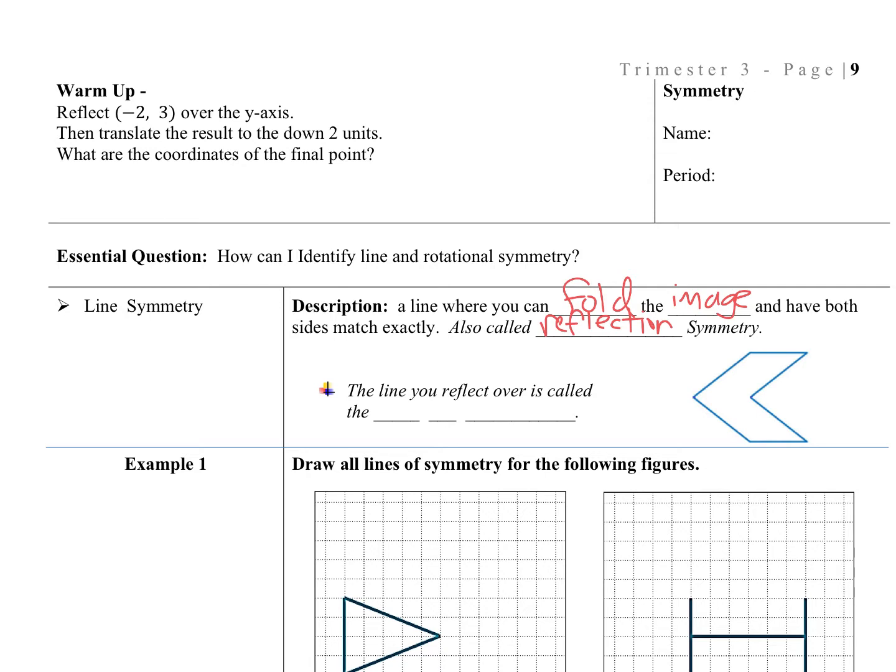So the line that we actually reflect over or flip over or fold over is called the line of reflection. We've already reflected images, so this should not be coming as a shocker. In this case, we have a lovely arrow, which is called a chevron. If I cut this somewhere, where will it be symmetrical? So if I cut or draw a line right here, this top half could fold over perfectly onto this one. So if this was a piece of paper, I could fold it onto each other perfectly. And that would be the line of reflection.